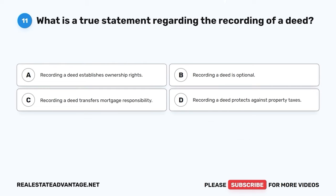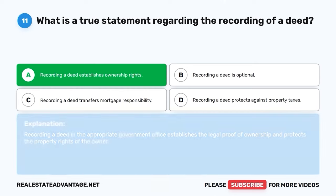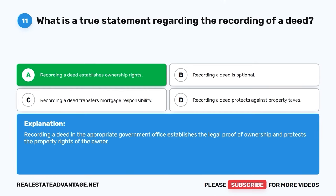Question 11. What is a true statement regarding the recording of a deed? A. Recording a deed establishes ownership rights. B. Recording a deed is optional. C. Recording a deed transfers mortgage responsibility. D. Recording a deed protects against property taxes. The correct answer is A: Recording a deed establishes ownership rights. Recording a deed in the appropriate government office establishes the legal proof of ownership and protects the property rights of the owner.